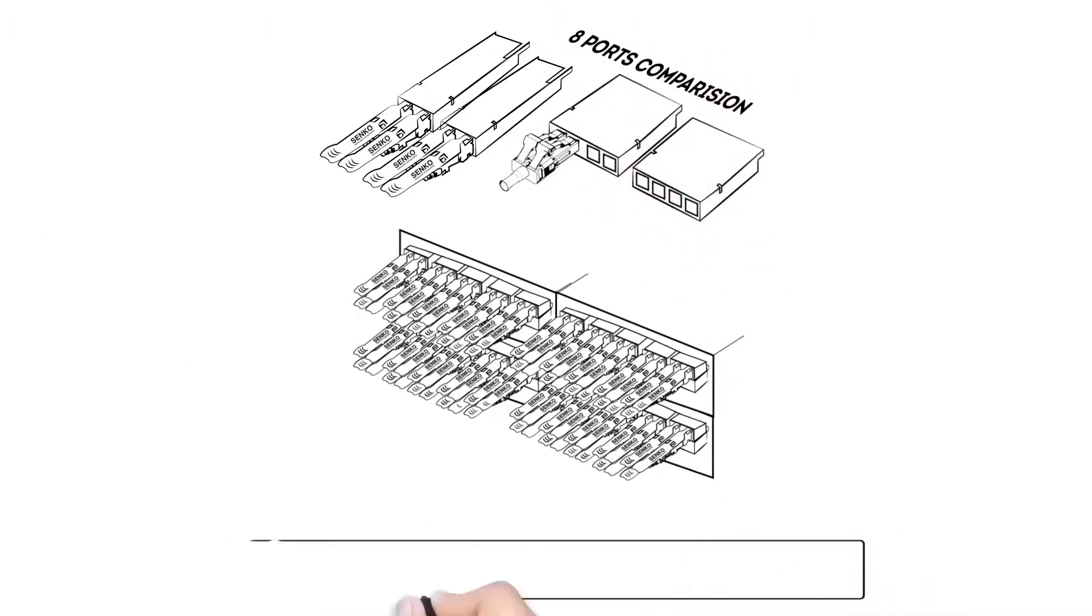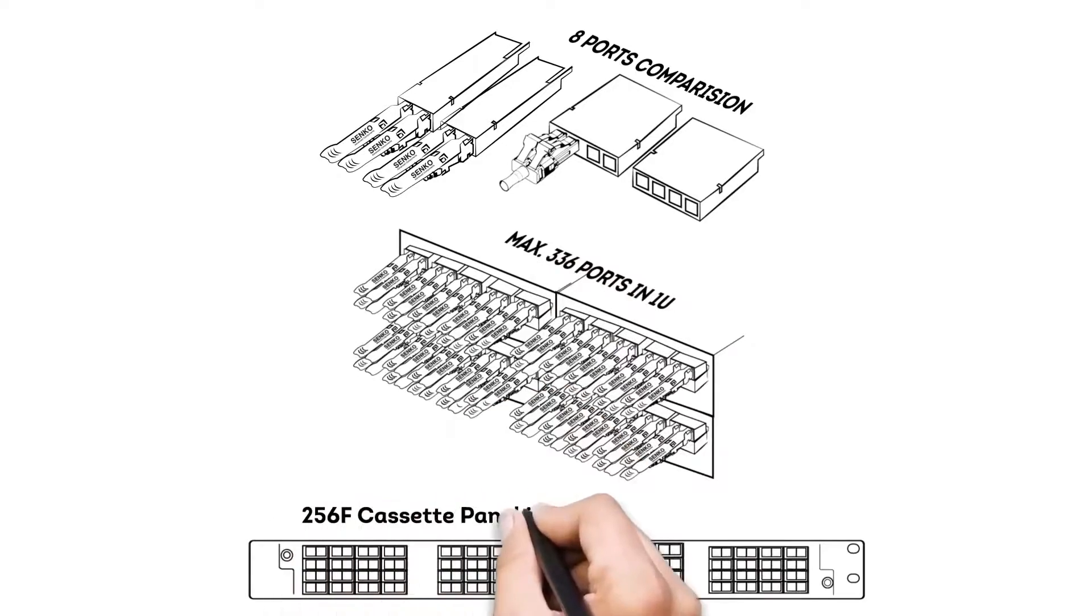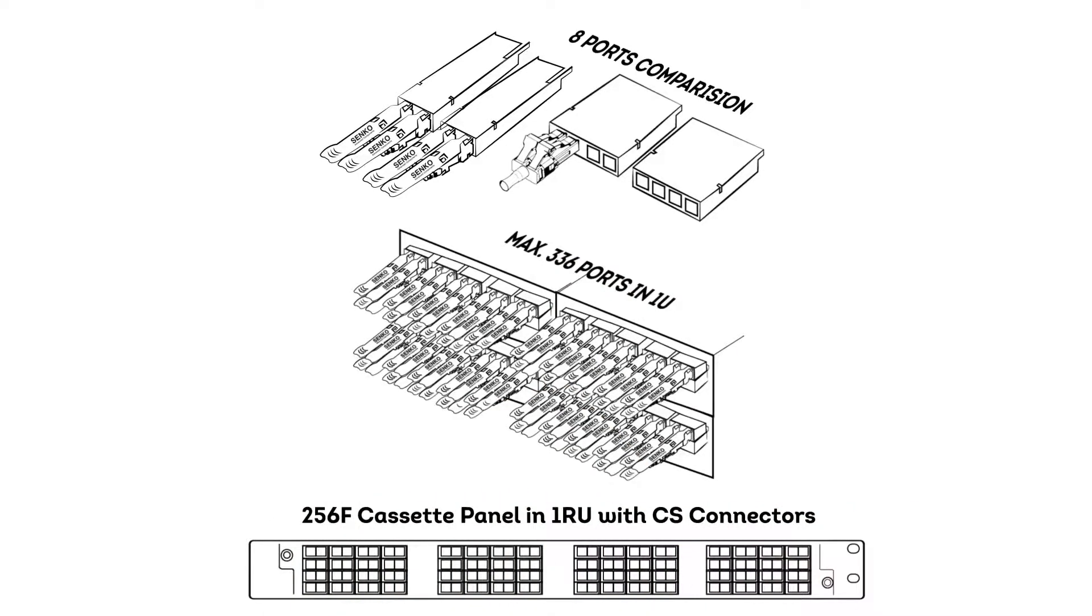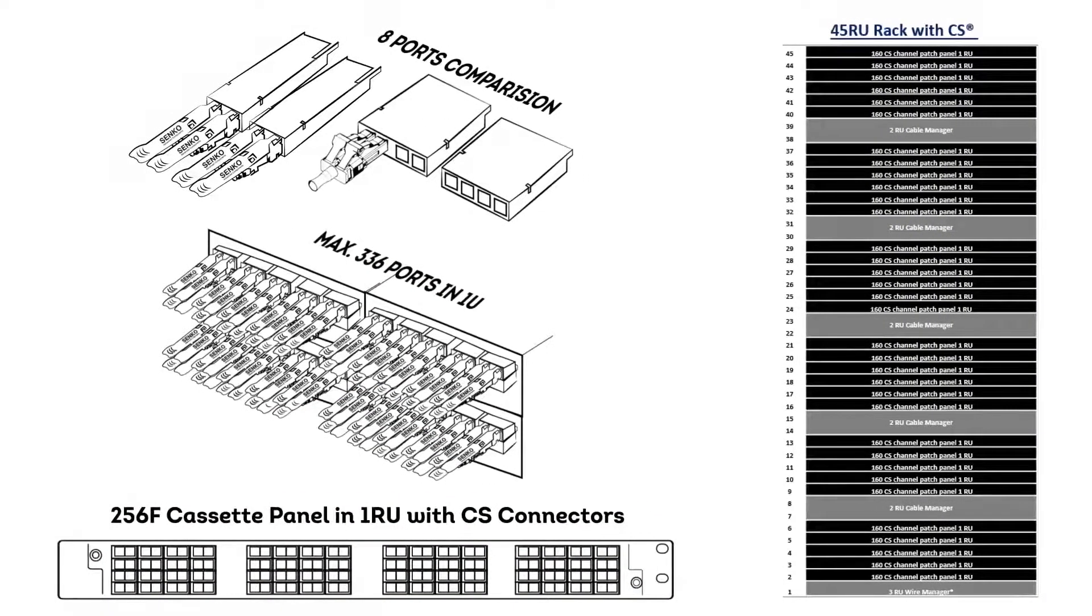In fact, using the CS, you can have over 8,000 connections in a single 45 RU rack and even have enough room to spare for cable management. How's that for high density?